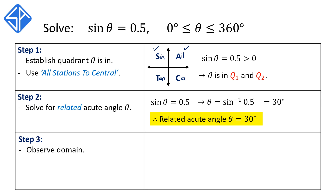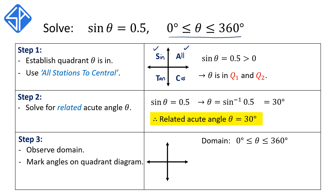The next step is to work out our final solutions. First, we need to observe the domain. The domain for this question is theta being between 0 and 360 degrees. We're going to mark the angles on the quadrant diagram, with our related acute angle theta being 30. Our solutions are in Q1 and Q2, so our first solution in Q1 is going to correspond to this ray. The related acute angle is 30 degrees, measured between the horizontal and the ray.